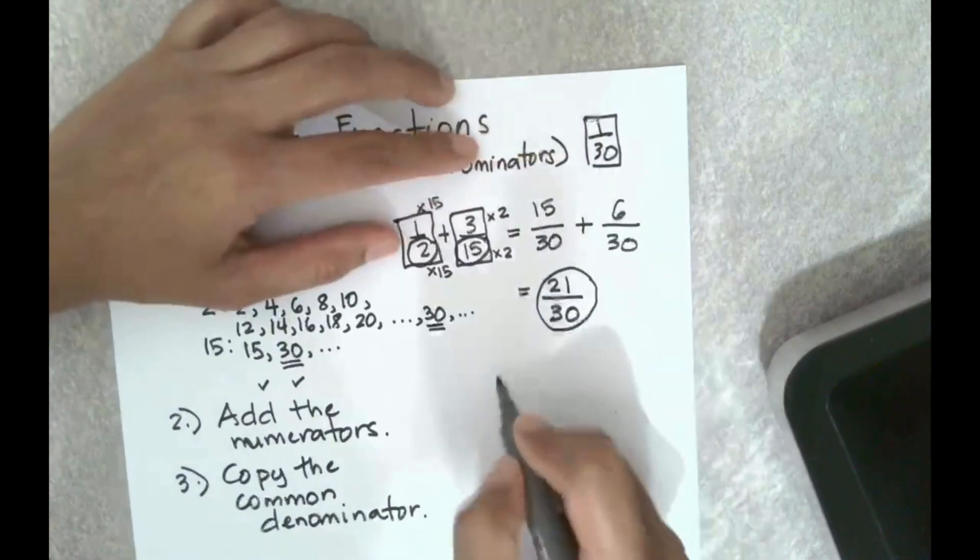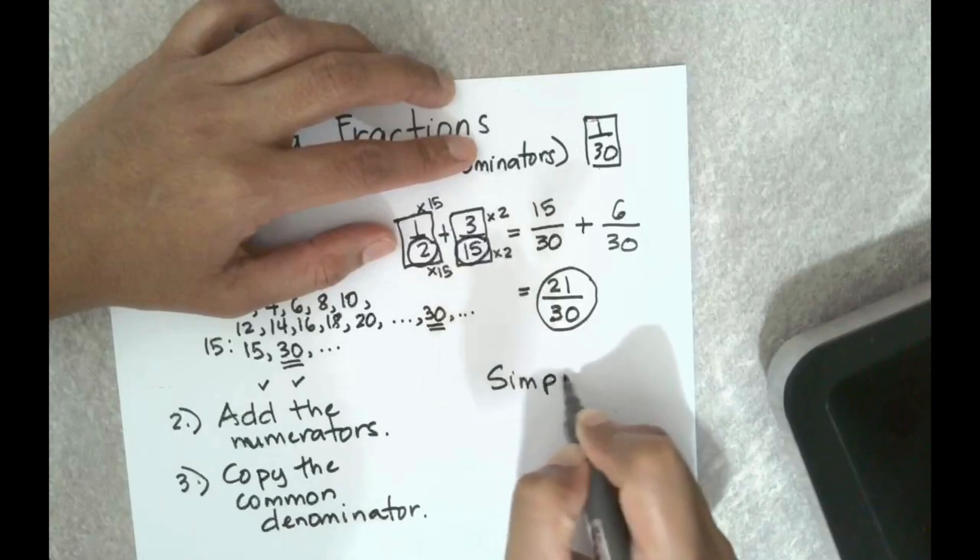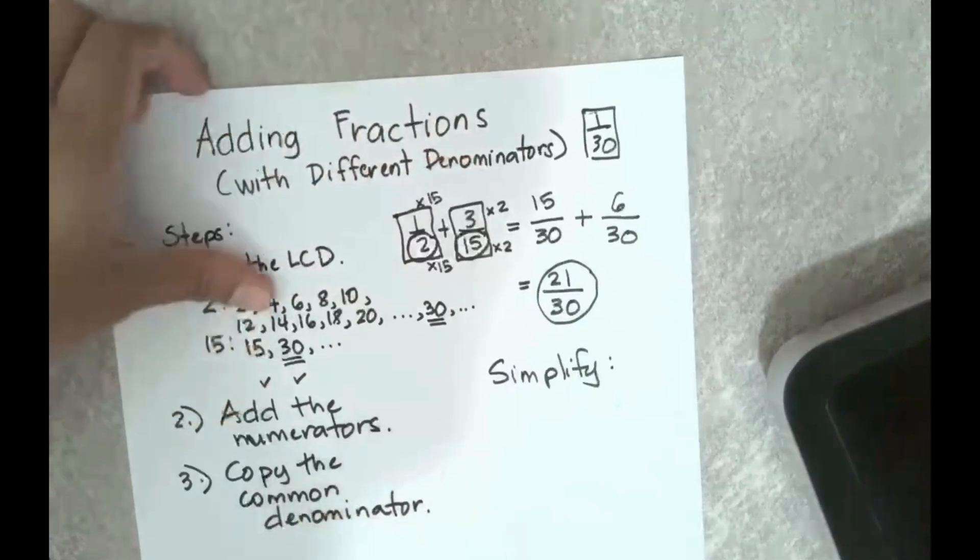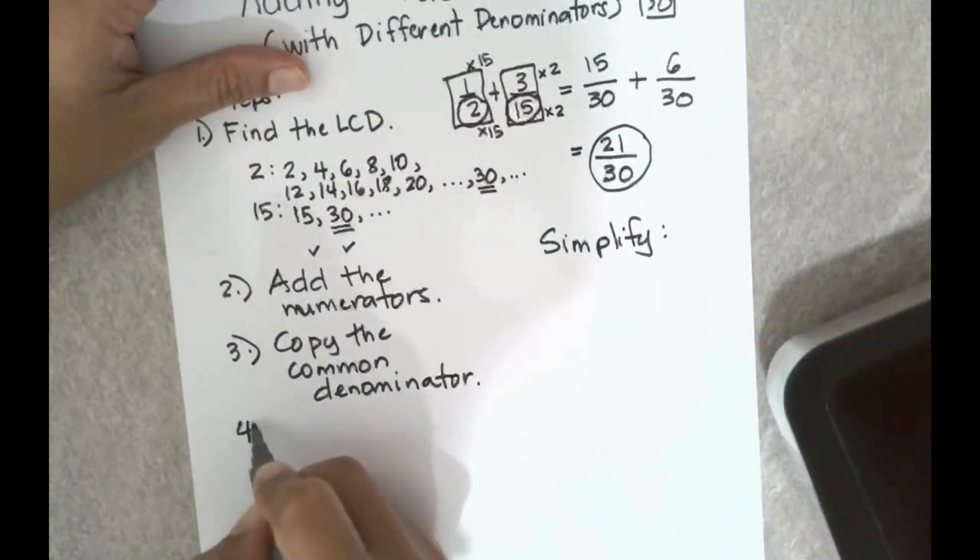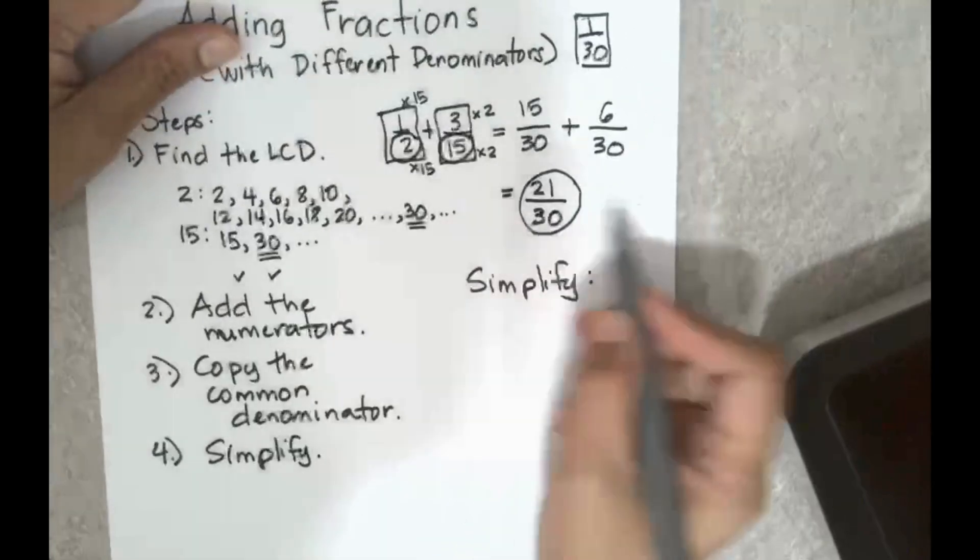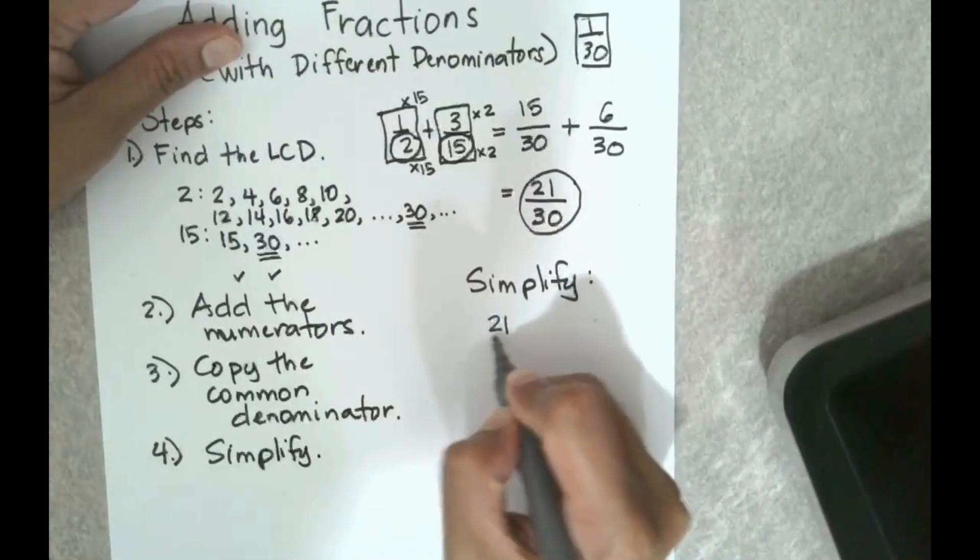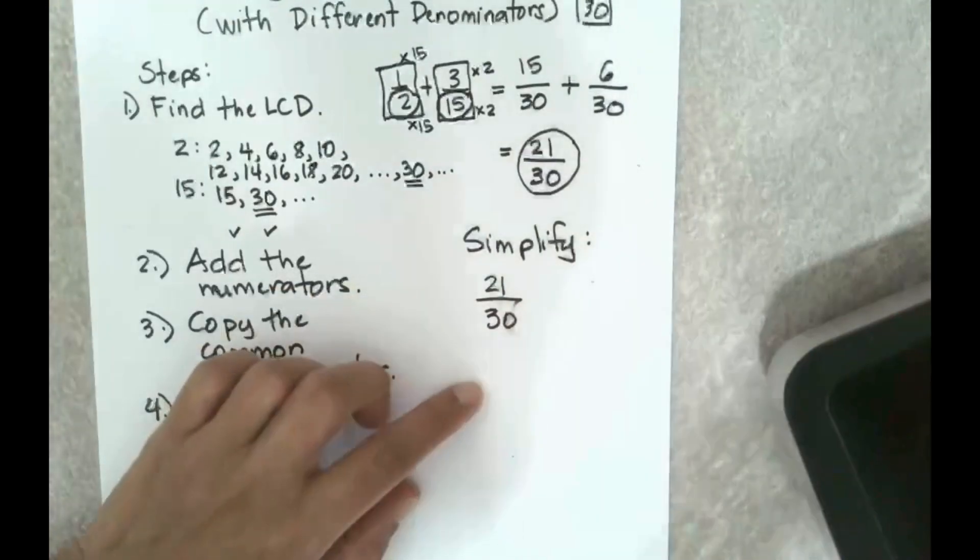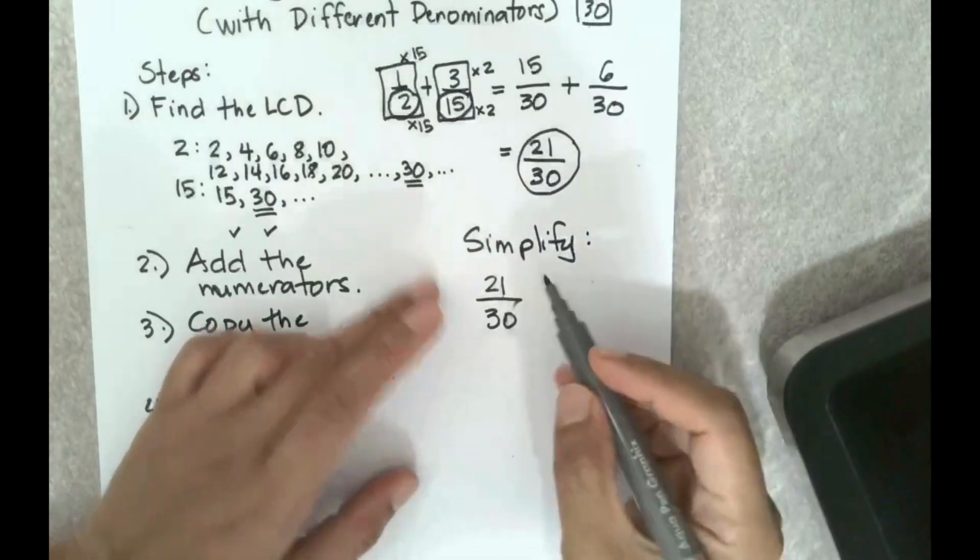This is the answer. Now you may be asking, how do you simplify this? So number four is to simplify the fraction. 21 over 30. To simplify the fraction you have to think of a common factor that these two numbers have.